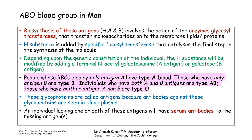Individuals whose RBCs display only the A antigen have two enzymes: one for adding the H substance via fucosyl transferase, and another for adding N-acetylgalactosamine — such individuals are typed as type A. Those with only antigen B on the RBC are typed as type B. Individuals having both A and B antigens are designated as blood group AB. Some individuals do not have the A or B antigen; they have only the H substance, and such individuals are designated as type O.